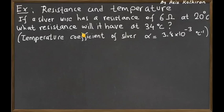The question is, what is the resistance for the same wire at 34 degrees Celsius? The temperature coefficient of silver is given as 3.8 times 10 to the minus 3 inverse Celsius degree. That means one degree of change in the temperature induces a resistance change of this much, 3.8 times 10 to the minus 3.